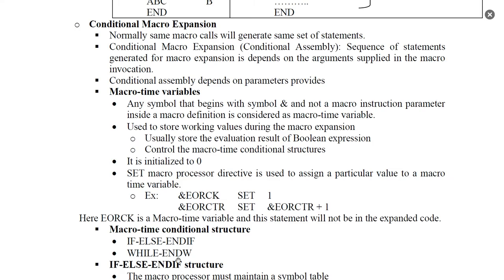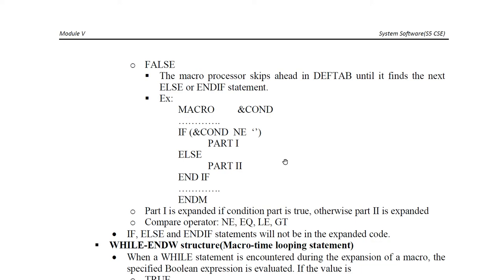The macro time conditional structures are: IF-ELSE-ENDIF and WHILE-NW. In the IF-ELSE-ENDIF structure: if the condition is true, path 1 (set of macro body statements) is expanded. If the condition is false, path 2 (else path statements) is expanded. The END IF marks the boundary.